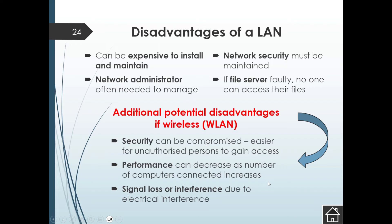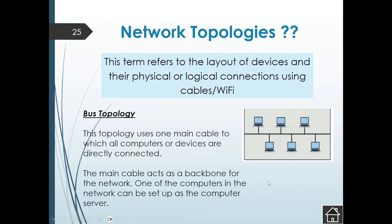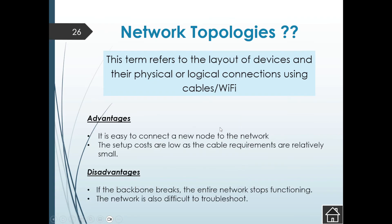Network topology refers to the layout of devices and their physical or logical connections using cables or Wi-Fi. The first type is the bus topology — there is one main cable and all computers are connected to it. This main cable acts as a backbone for the network, and one of the computers can be set up as the server.